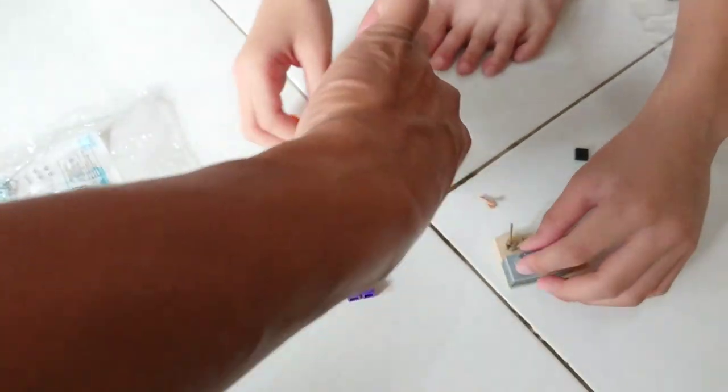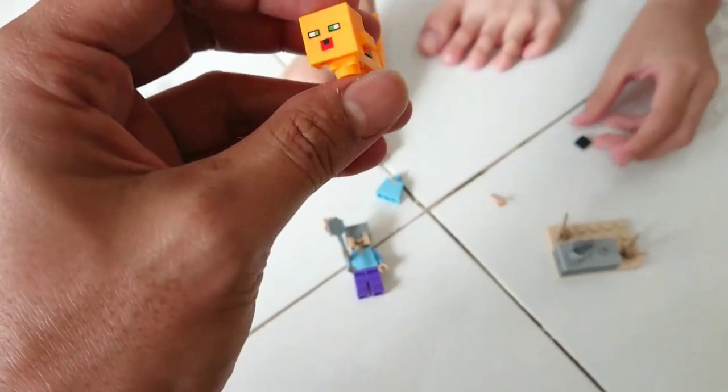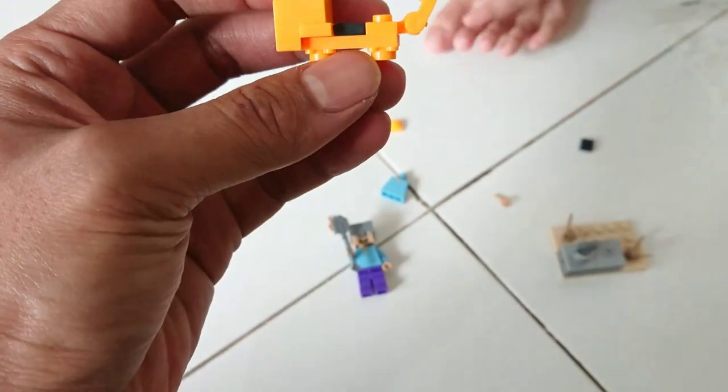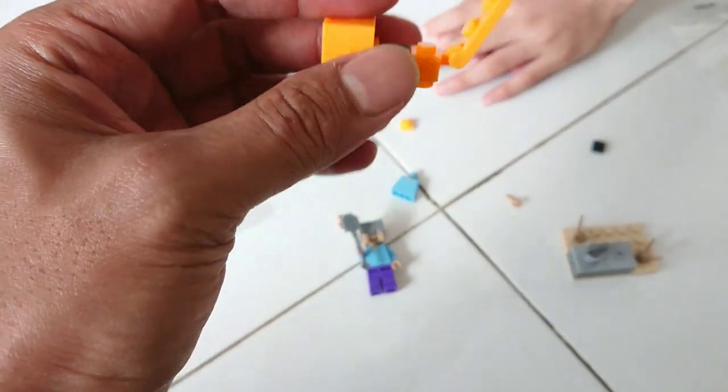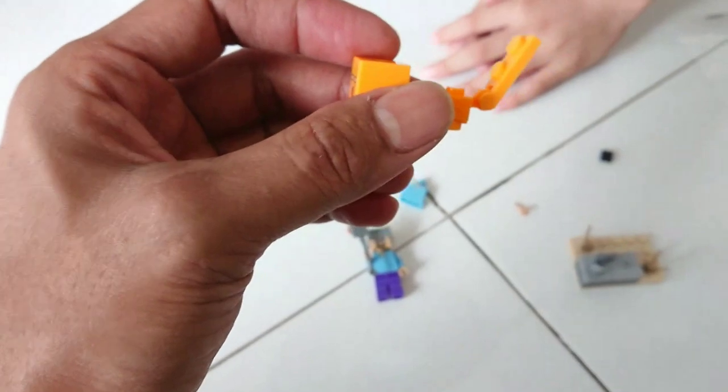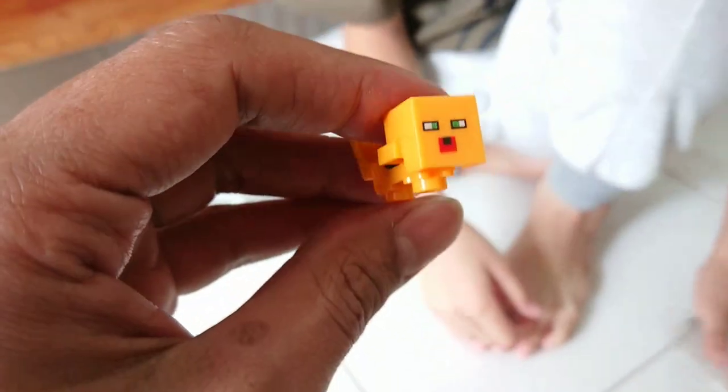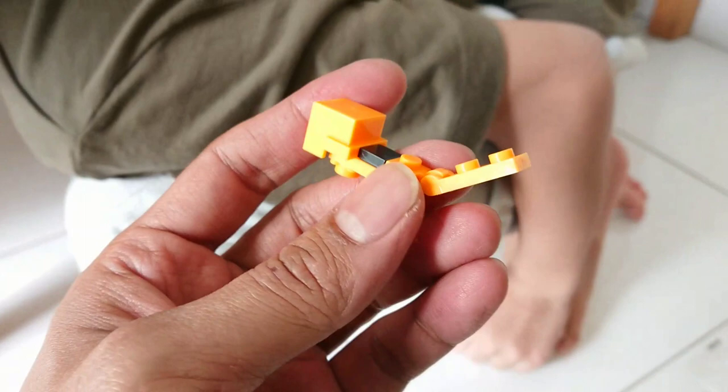Seharusnya apa? Ocelot ya, iya. Tapi ini aneh banget ya, ini ocelot yang coklat ember. Salah banget lah, ini keliru banget lah. Seharusnya bukan begini.